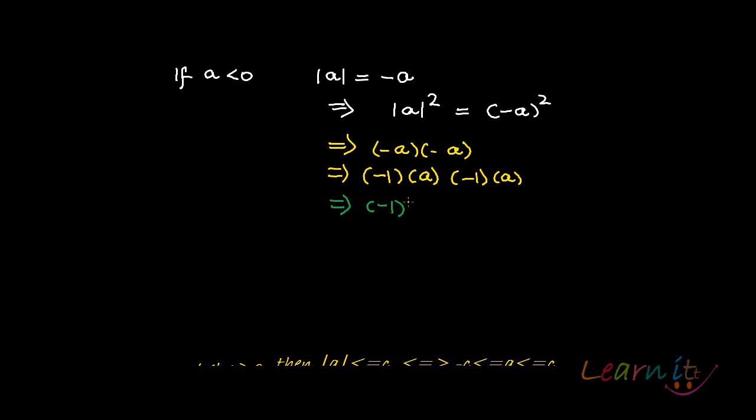Again, due to associativity of real numbers, I can write minus 1 to the power 2 into a, a. So this is nothing but 1 into a square, which is a square.